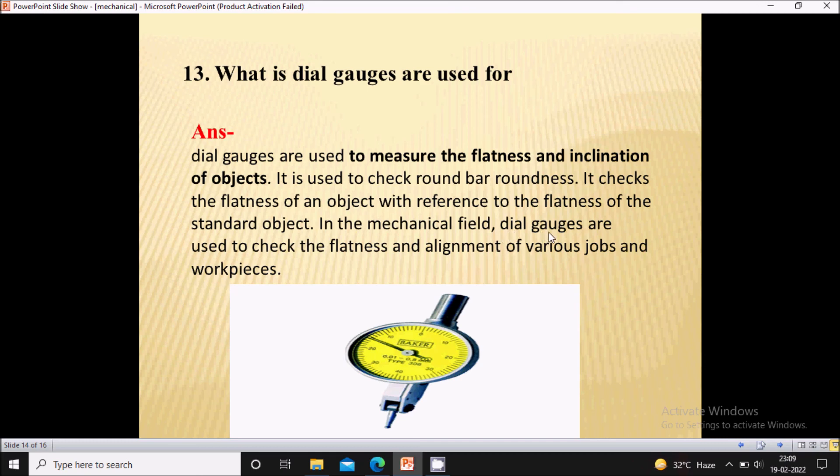In mechanical field, dial gauges are used to check the flatness and alignment of various job and workplaces. We can see the use of dial gauges on VMC machines where it is used for aligning the dice.